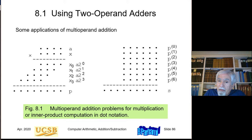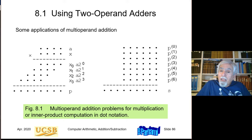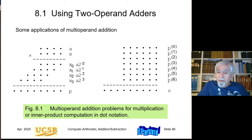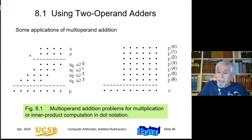Looking at two examples of where multi-operand addition is encountered: the left example is multiplication. The four-bit numbers a and x are being multiplied, and for each bit of x, we form a partial product, which is the product of that bit of x and the number a. Those are shifted with respect to each other because different bits of x have different weights. Once these partial products are generated, they must be added together — that's where multi-operand addition comes into play.